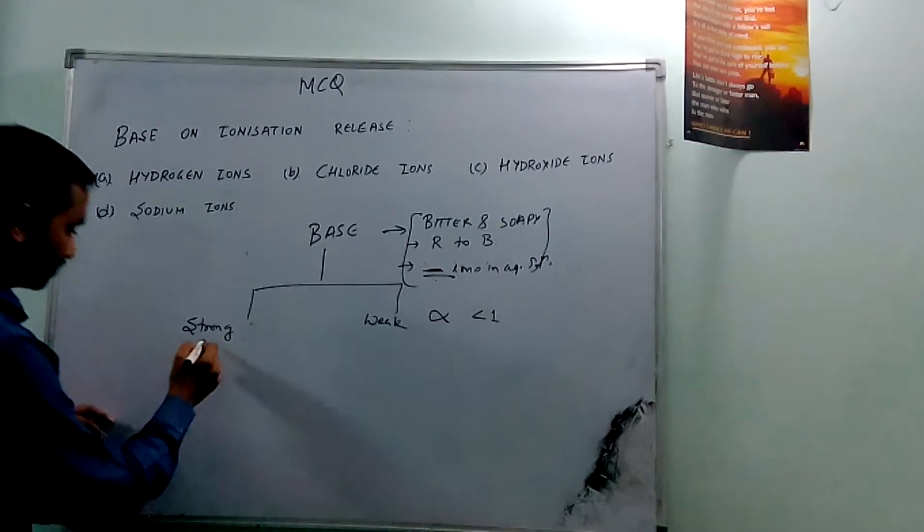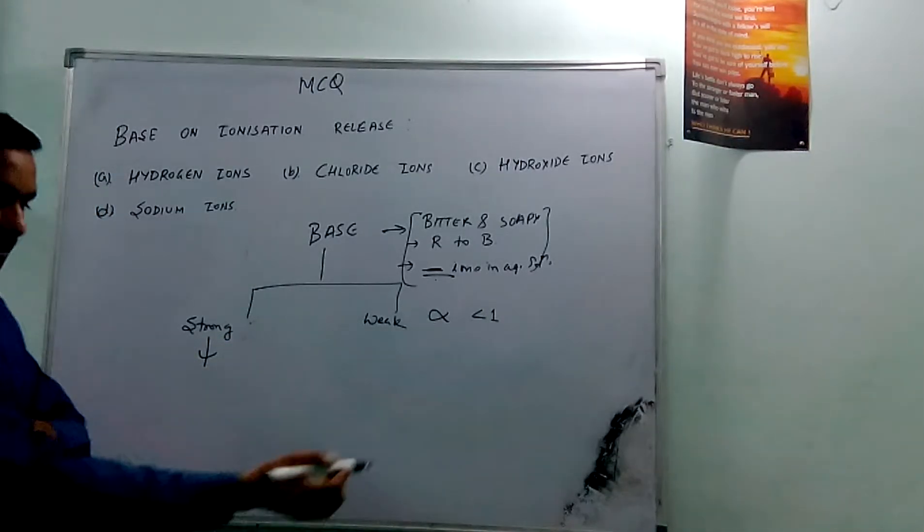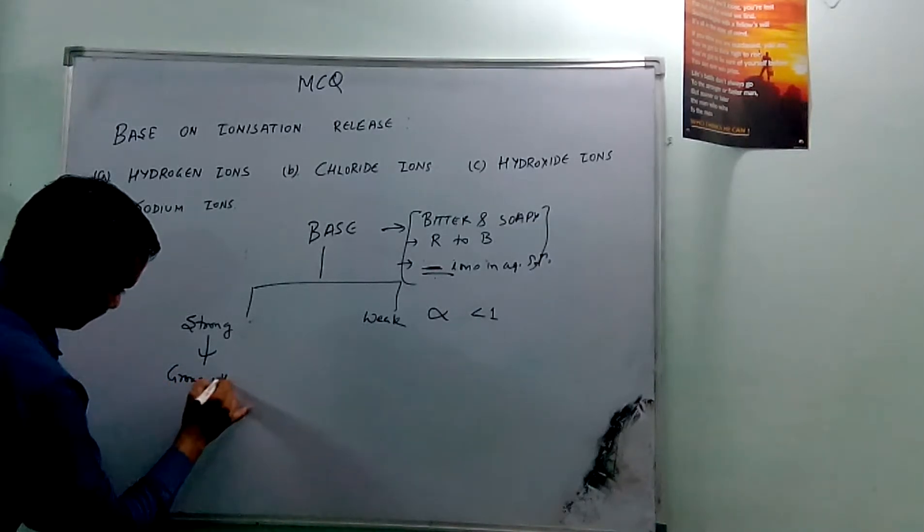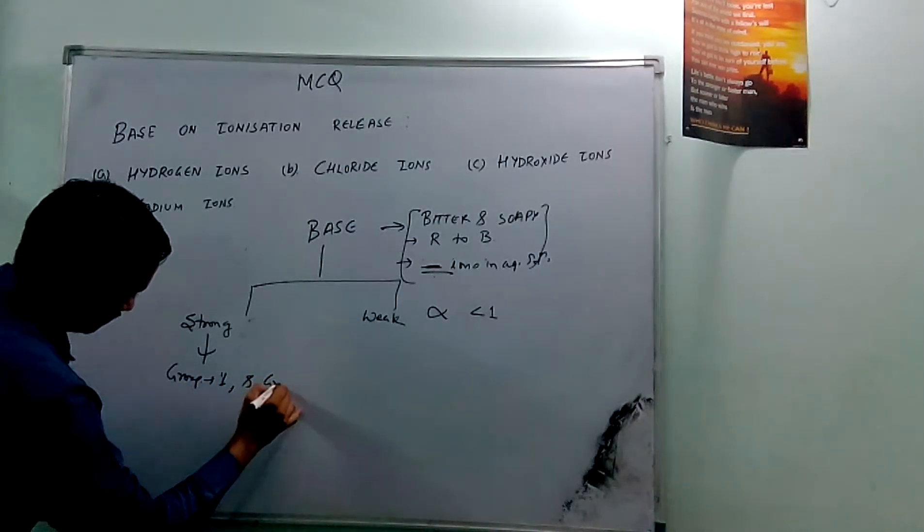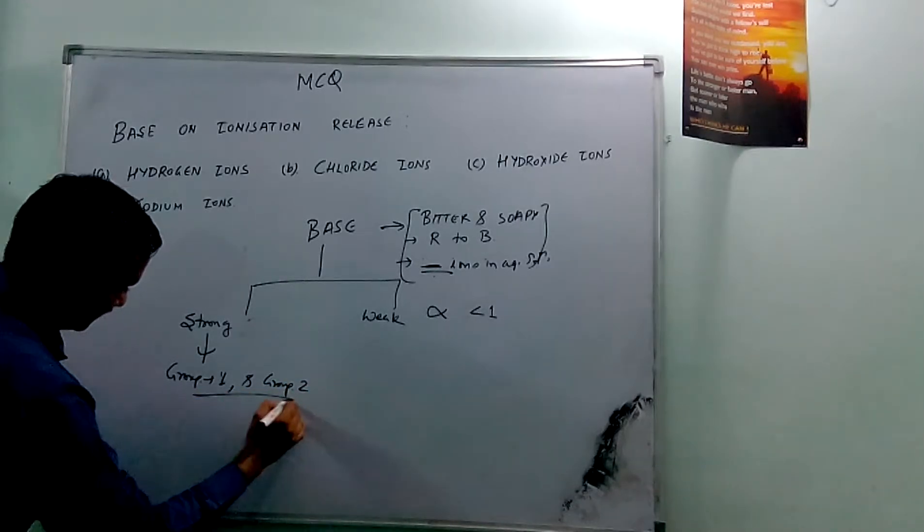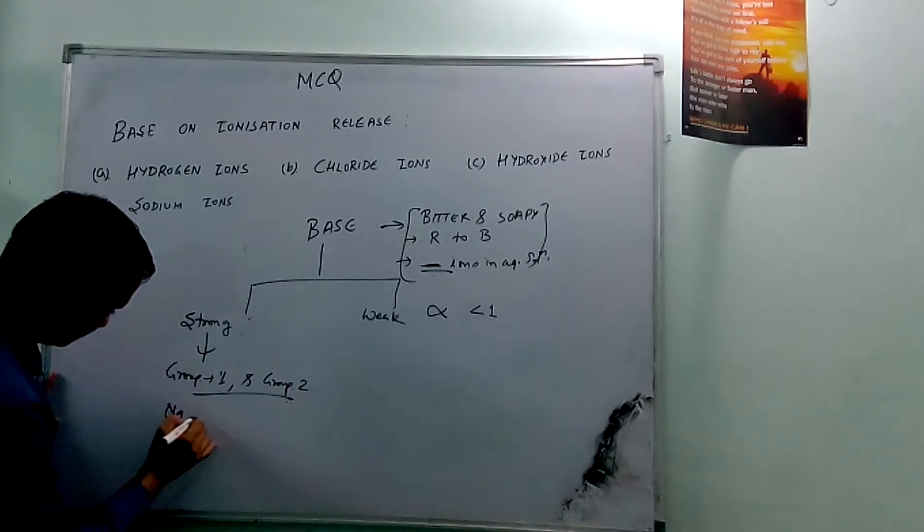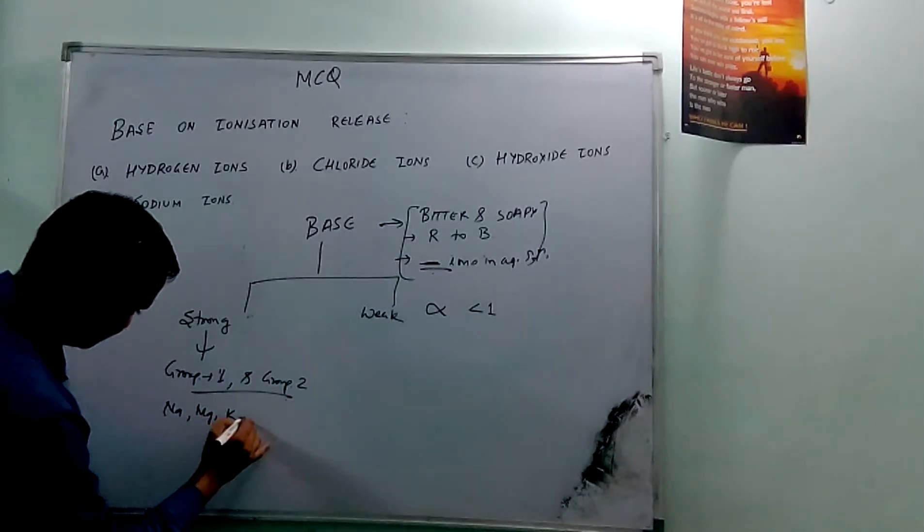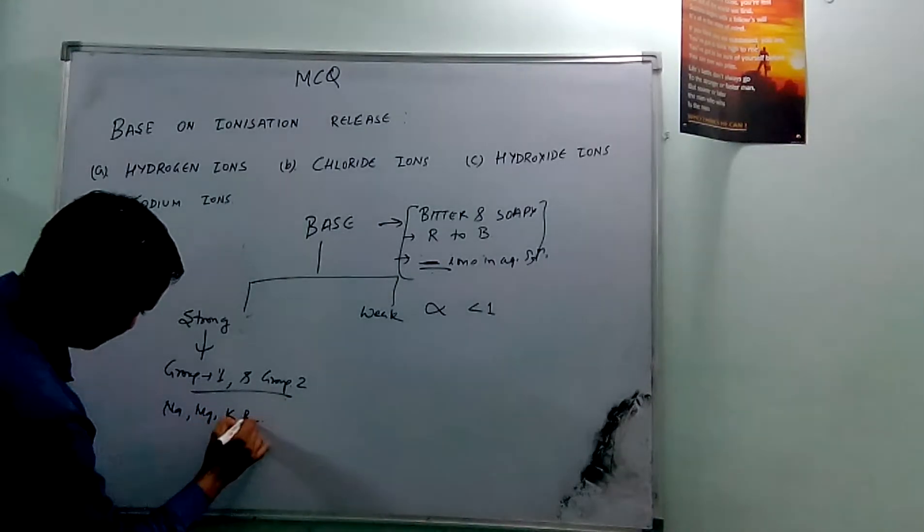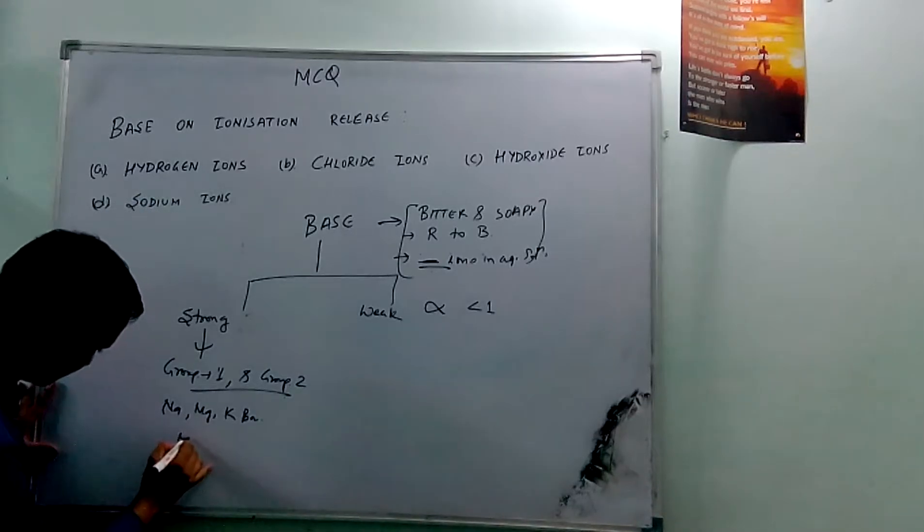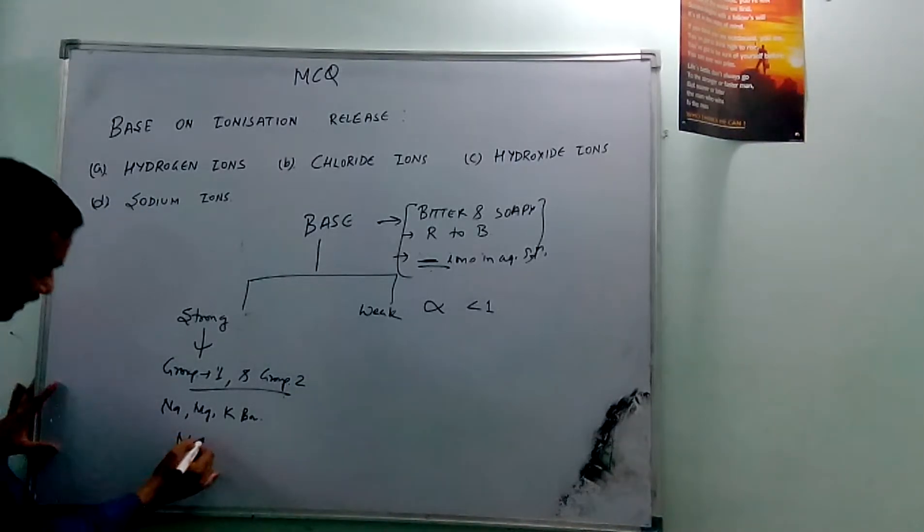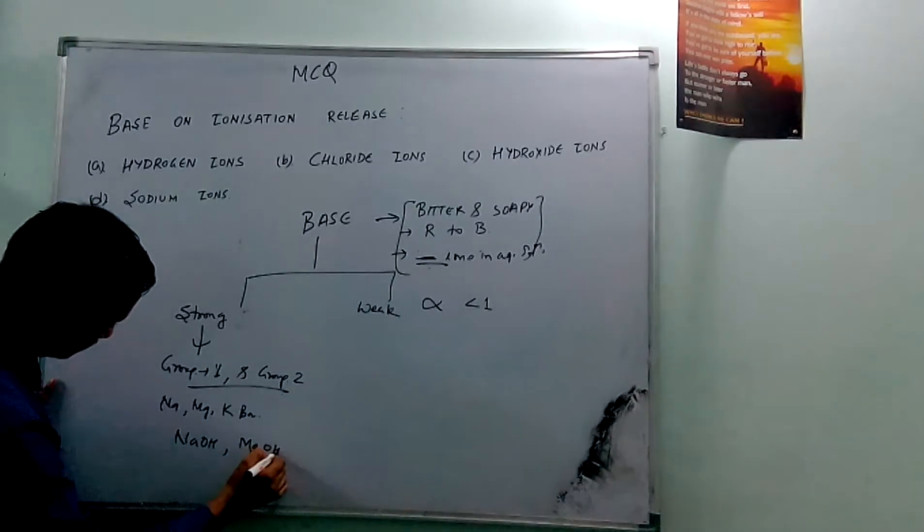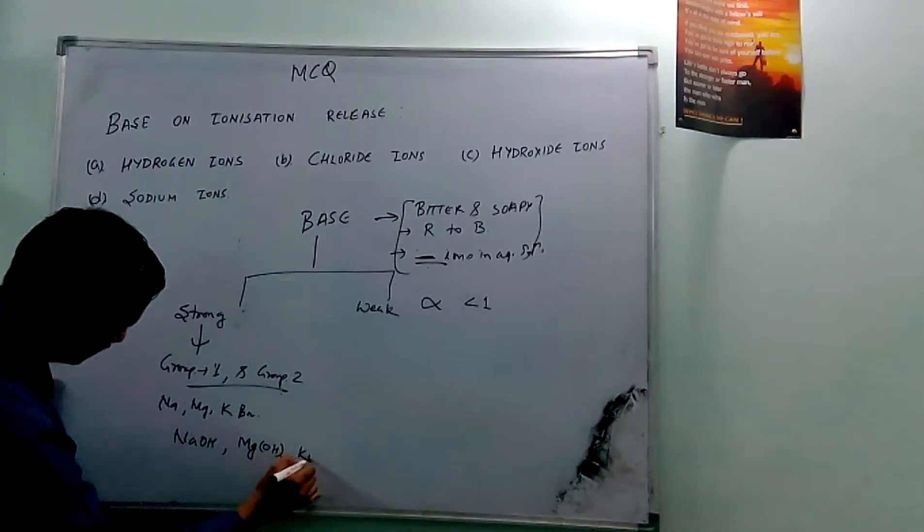Strong bases are formed from group one and group two elements, like sodium, magnesium, potassium, barium, etc. They all produce, for example, NaOH, Mg(OH)2, KOH, and Ba(OH)2.